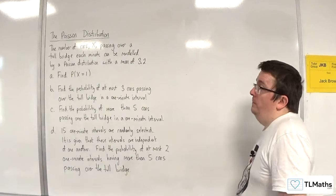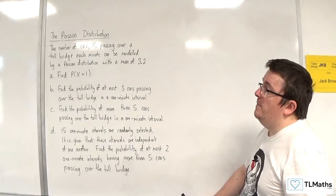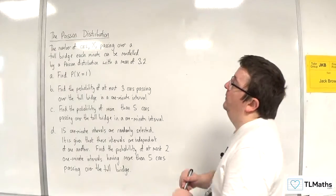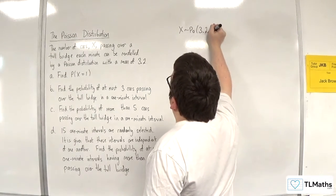In this video, we're going to be working through this problem. The number of cars x passing over a toll bridge each minute can be modeled by a Poisson distribution with a mean of 3.2. So x is a Poisson distribution with mean 3.2.